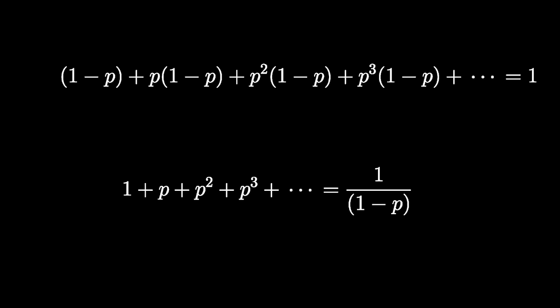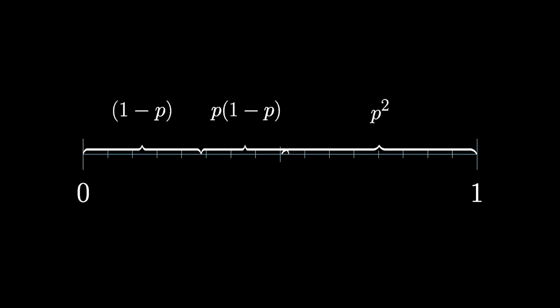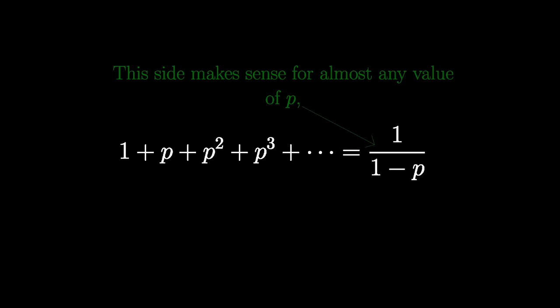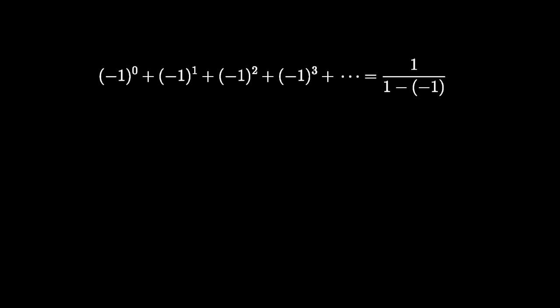In this formula, the universe has offered a weird form of nonsense. Even though the way that you discovered it only makes sense for values of p between zero and one, the right-hand side still makes sense when you replace p with any other number, except maybe for one. For instance, plugging in negative one, the equation reads one minus one plus one minus one, on and on forever alternating between the two, equals one half. Which feels both pretty silly and kind of like the only thing that it could be.